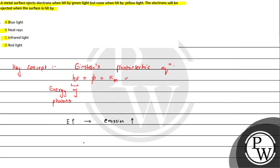We can see clearly that green light causes electrons to be ejected, but yellow light does not. This means the energy of green light is more than yellow light. Energy of a photon can be written as hν or hc/λ, so a smaller wavelength means higher energy and vice versa.